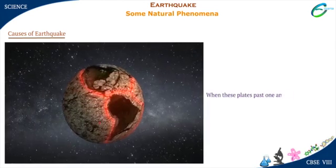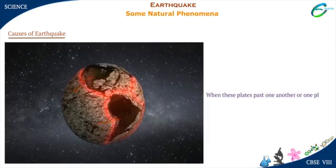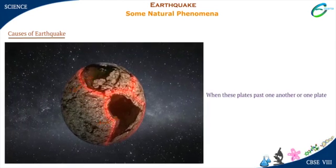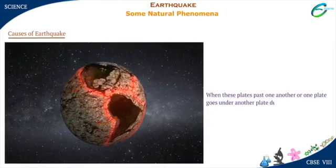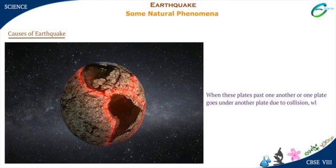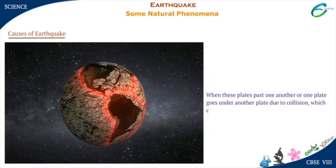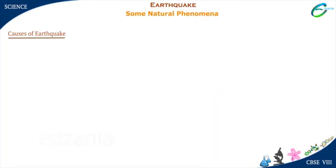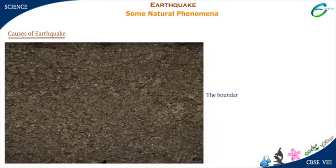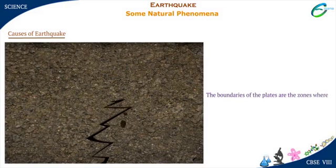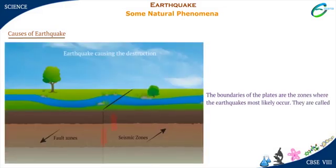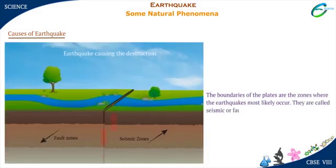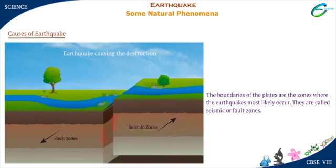When these plates pass one another, or one plate goes under another plate due to collision, it causes disturbances. The boundaries of the plates are the zones where earthquakes most likely occur. They are called seismic or fault zones.